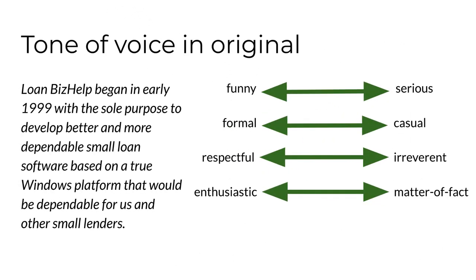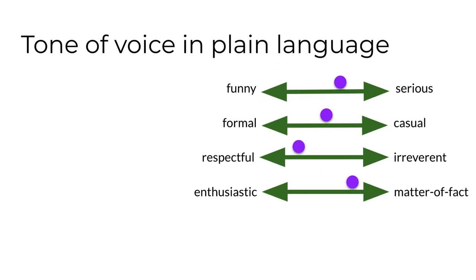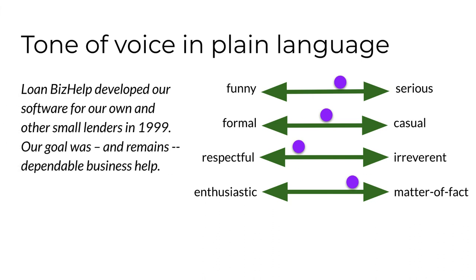Take a second to read the first paragraph of the original. Here's how I perceive the tone of voice in the original on our four dimensions: a little bit on the serious side, neutral on the formal-casual dimension, highly respectful, and matter-of-fact. There's no way to know for sure how the intended audience perceives the tone without testing. Now read the plain language version I created. I believe the only change in tone from the original is that the plain version is on the casual side of the continuum.